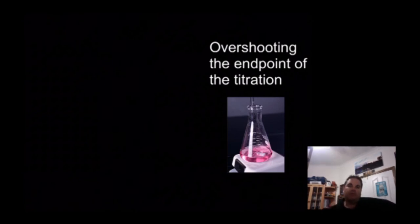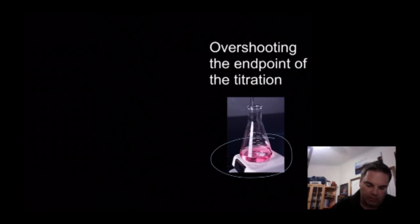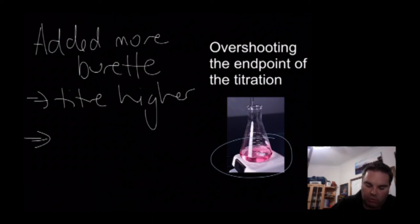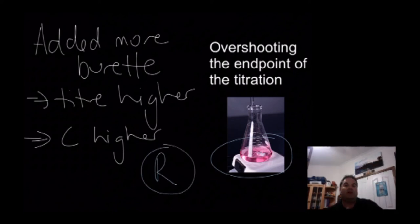Overshooting the end point of the titration. The colour shown is probably a little bit darker pink than what we'd actually like. In titrations you always want to aim for the first permanent colour change - normally a pale pink. If you've gone a little bit further in your colour change, that means you've added more from your burette, making your titration value appear higher. That makes your calculated concentration of the sample in the conical flask appear higher as well, because it suggests more moles were needed to reach the end point. This is another example of a random error - overshooting affects your ability to get concordant titers, which is your precision.